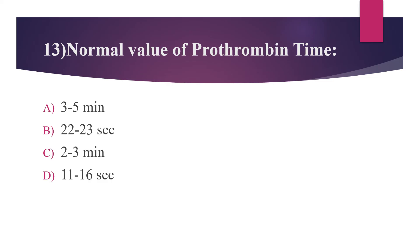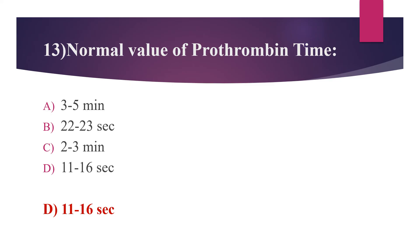Thirteenth question: the normal value of prothrombin time. Option A: 3 to 5 minutes. Option B: 22 to 23 seconds. Option C: 2 to 3 minutes. Option D: 11 to 16 seconds. The answer is option D, 11 to 16 seconds. The INR normal value is 0.8 to 1.1.